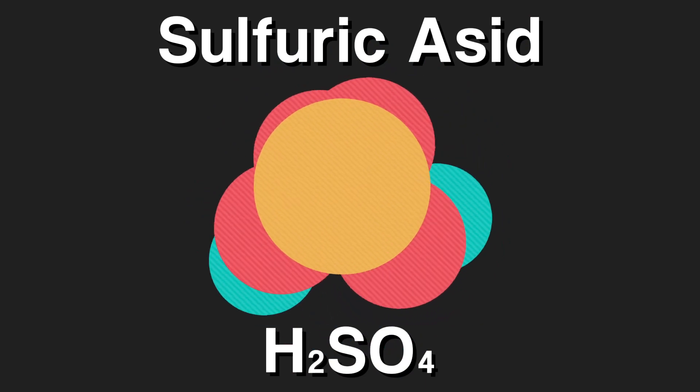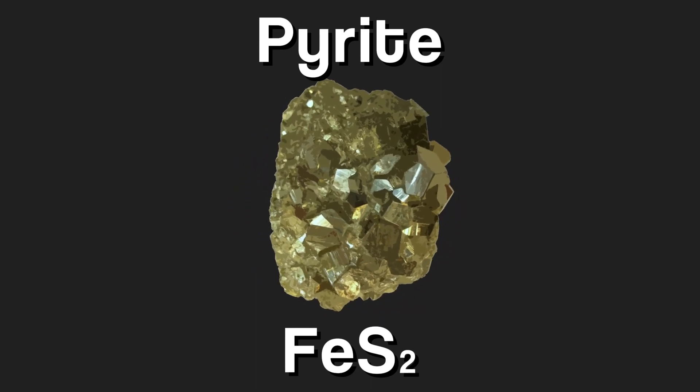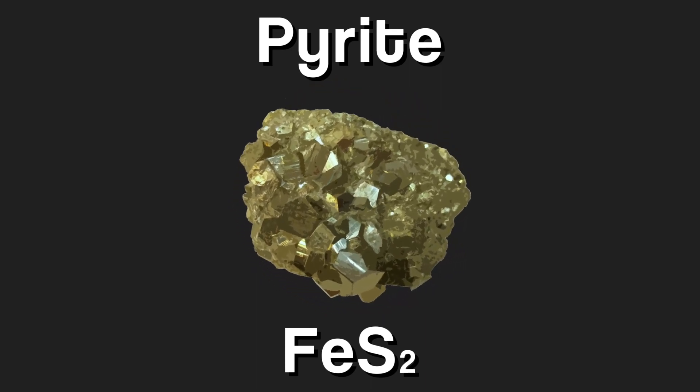Pyrite is an iron sulfide mineral. It's yellow and crystalline, which makes it look like gold.